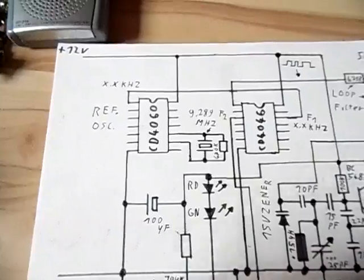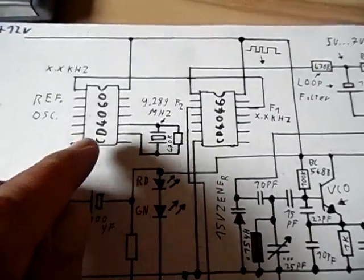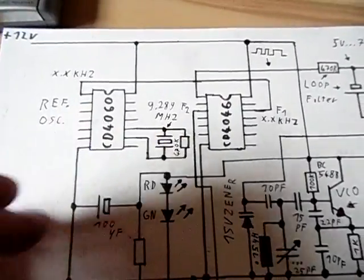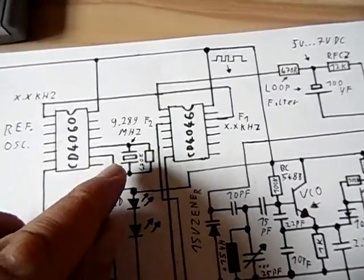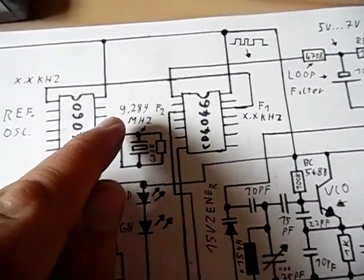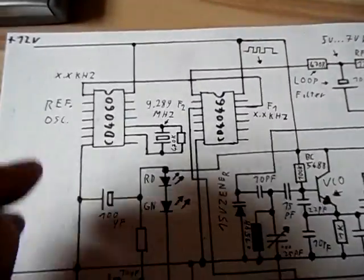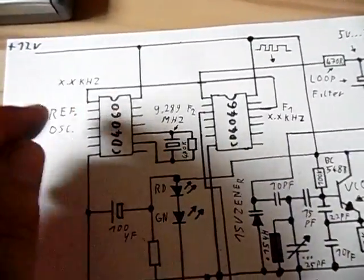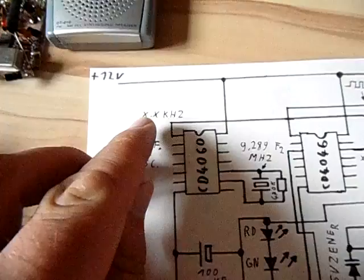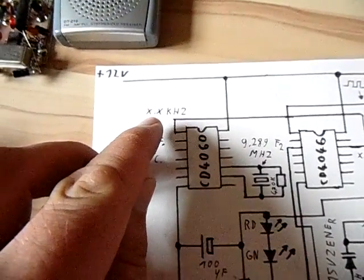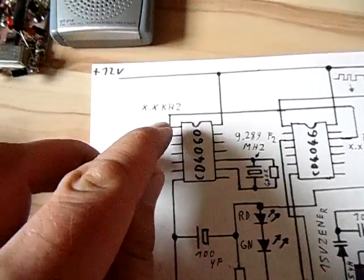So first we have our reference oscillator. The reference oscillator is made with the CD4060 integrated circuit. The circuit takes a frequency. For example, in my case, I'm using a 9.289 megahertz crystal and divides it very much. So you get a few kilohertz, a few kilohertz in the audible range, square wave signal coming out of this chip.